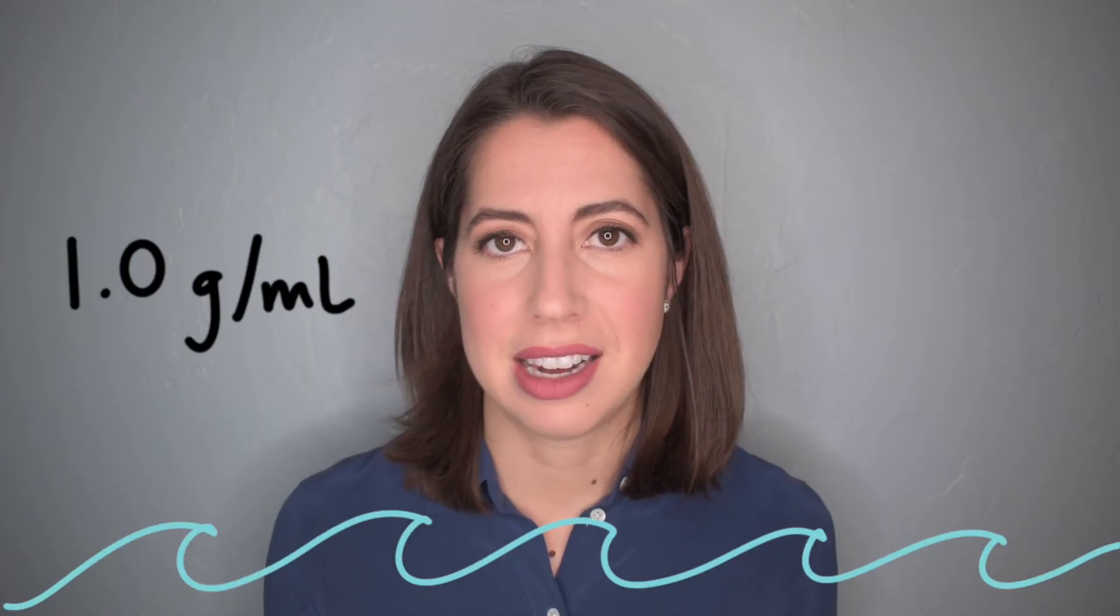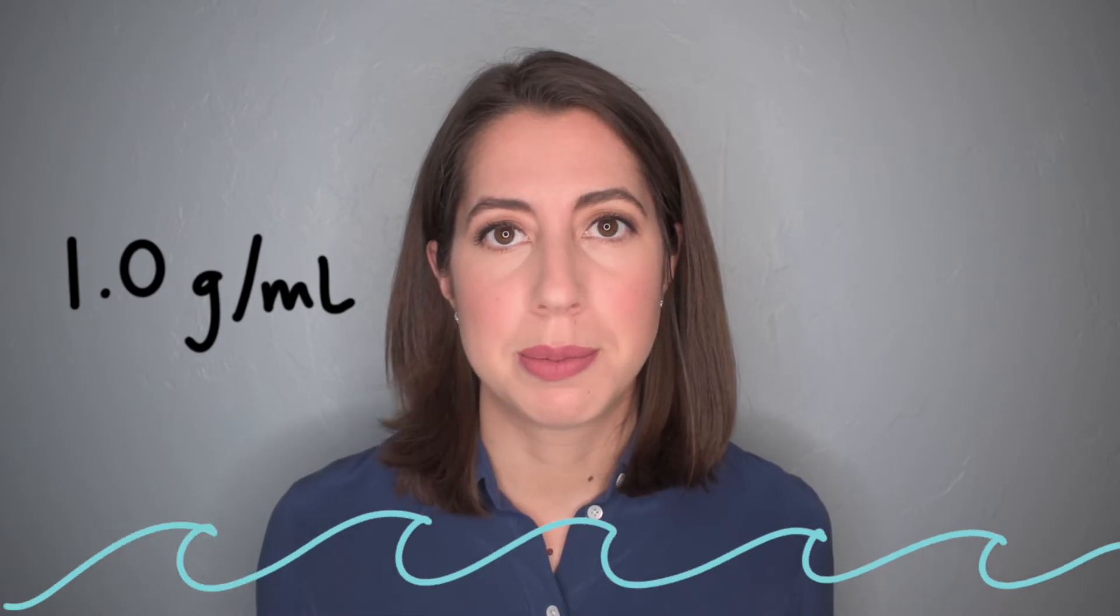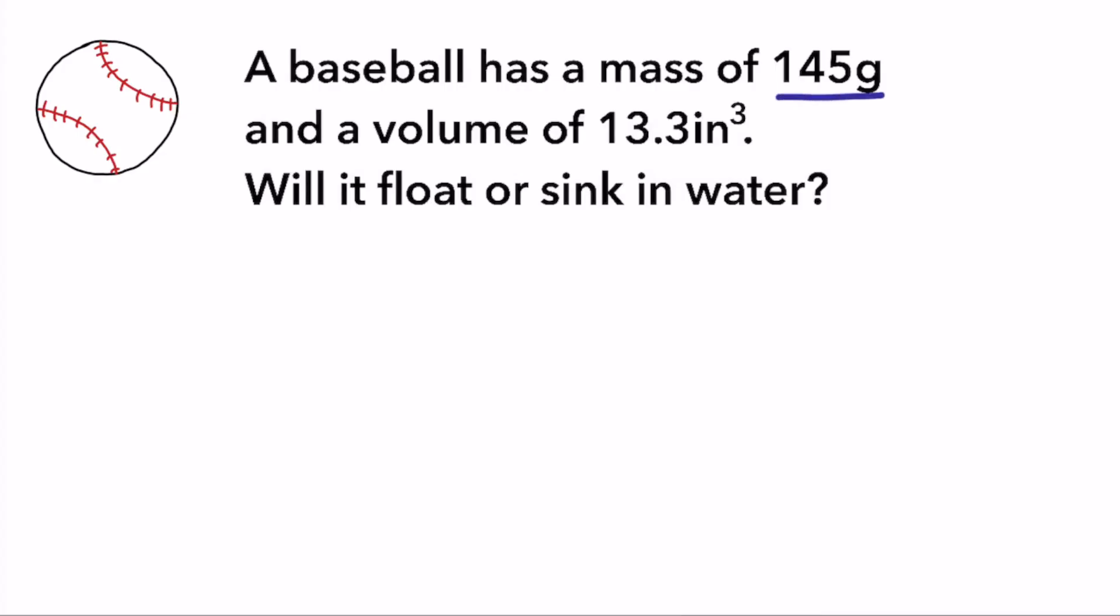Sink or float? That all depends on whether an object has a density greater than or less than the density of water. Water has a density of 1.0 grams per milliliter. A baseball has a mass of 145 grams, and a volume of 13.3 inches cubed. Will it float or sink in water?